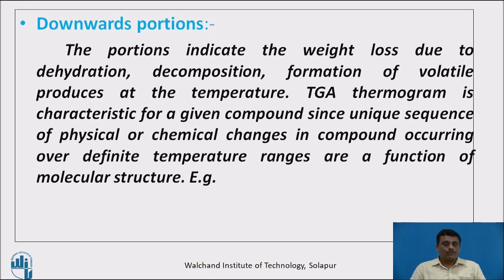The second type is downward portions. These portions indicate weight loss due to dehydration, decomposition, or formation of volatile products at that temperature. A TGA thermogram is characteristic for a given compound, since it shows a unique sequence of physical or chemical changes occurring over definite temperature ranges, which is a function of molecular structure.